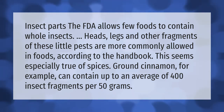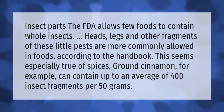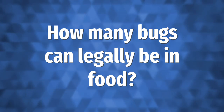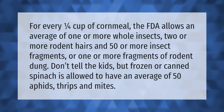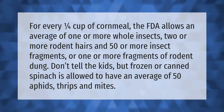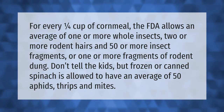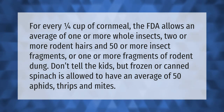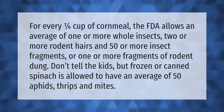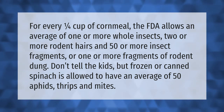can contain up to an average of 400 insect fragments per 50 grams. For every one-quarter cup of cornmeal, the FDA allows an average of one or more whole insects, two or more rodent hairs, and 50 or more insect fragments, or one or more fragments of rodent dung. Don't tell the kids.